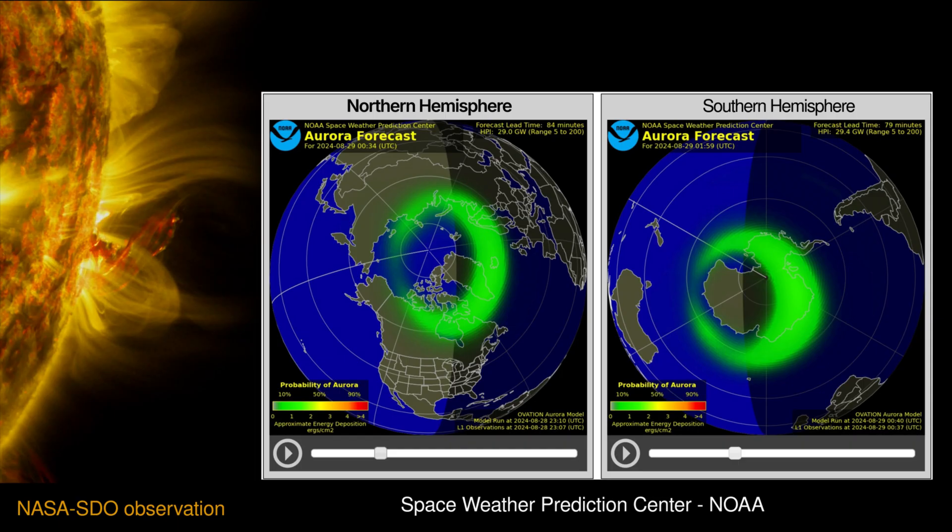Aurorae often appear at latitudes between 60 and 75 degrees near the polar regions, both at the north and south. The auroral zone shows up to be an oval shape concentrated at the night side of the Earth.